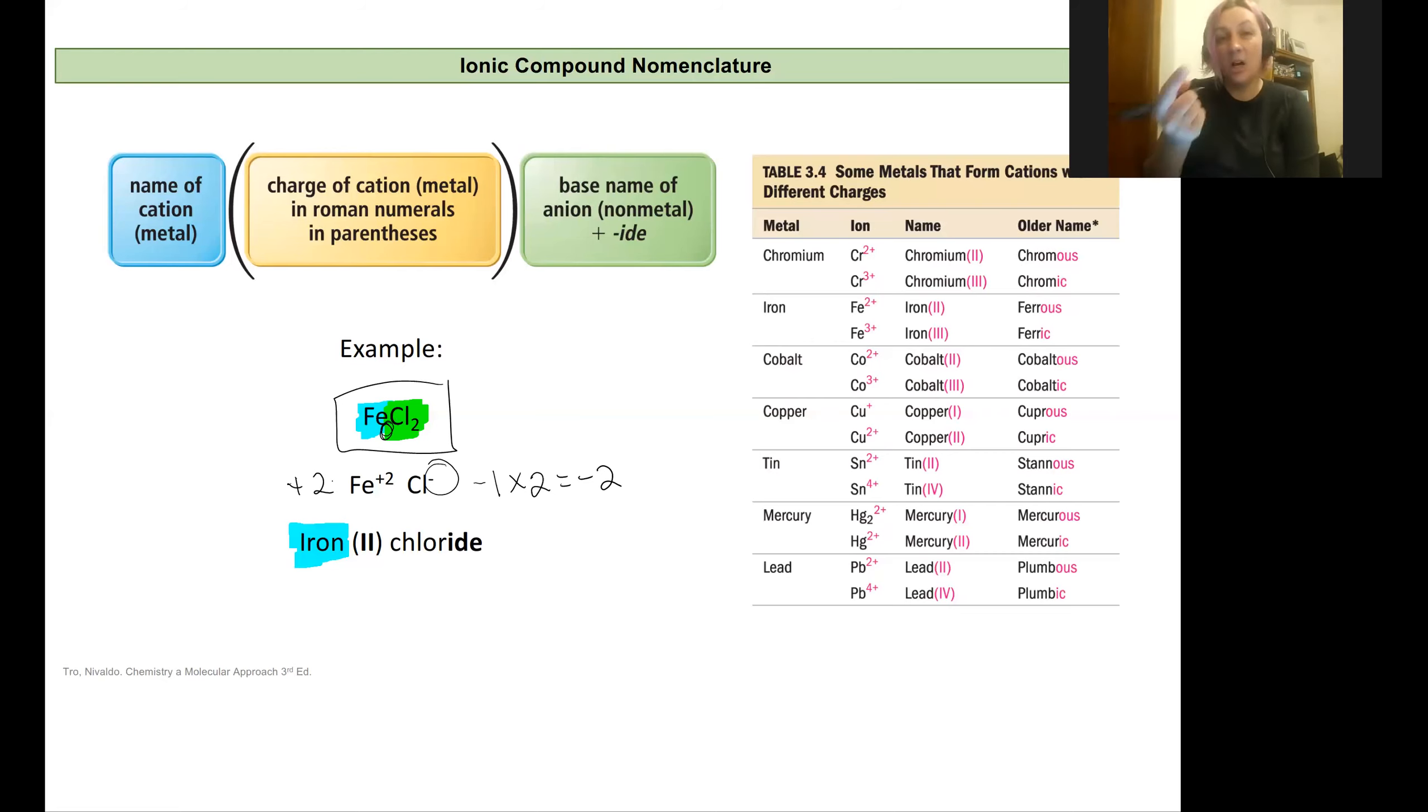So I'm going to tell my reader it's a plus two by writing that charge in Roman numerals in parentheses. So it's really key here. Is that I'm using Roman numerals and I'm using parentheses and it follows the cation.